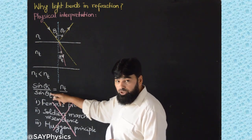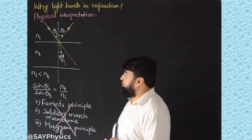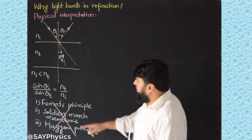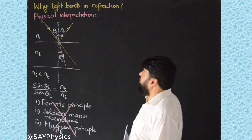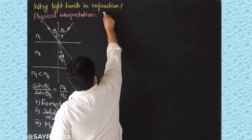Fresnel equations are baked into the Maxwell equations. So we will start from the Maxwell equations and then we will understand why this light is bending. So let's start with the Maxwell equations.